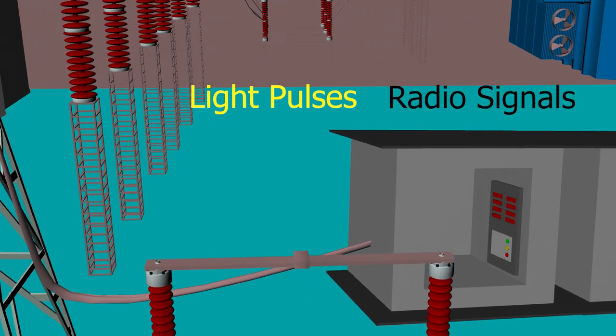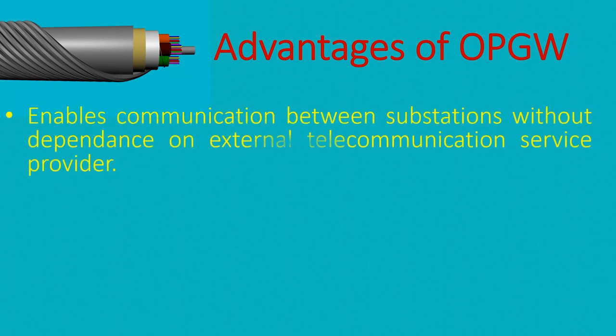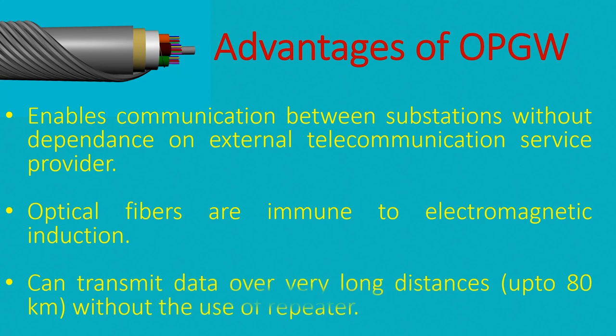Now we explain some of the advantages of OPGW. OPGW enables substations to communicate with each other without any dependency on external telecommunication service provider. Optical fibers are immune to electromagnetic induction, therefore these fibers transmit data without any interference from radio signals.